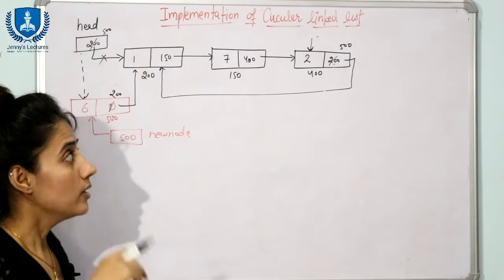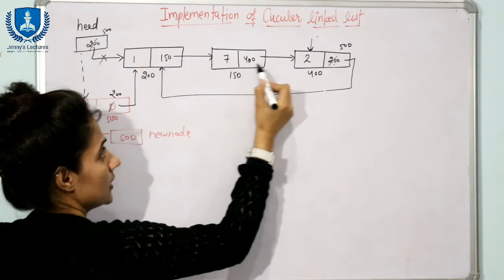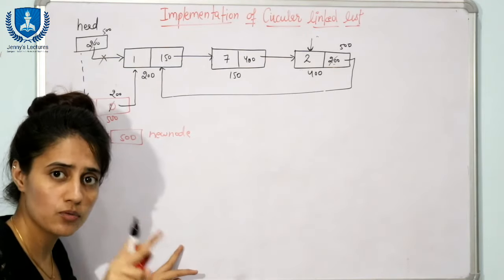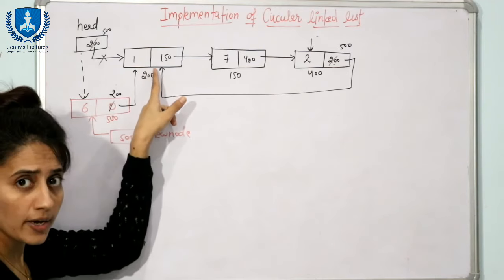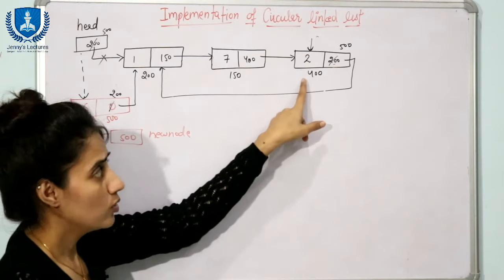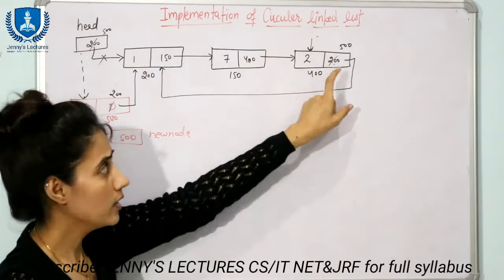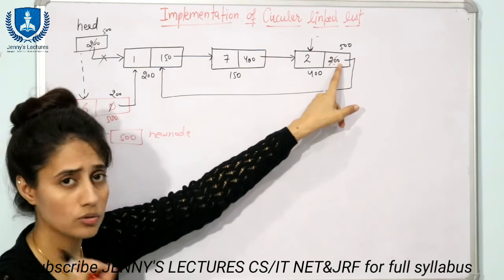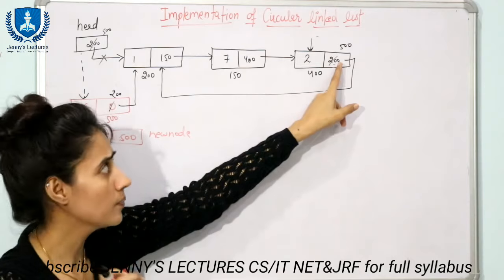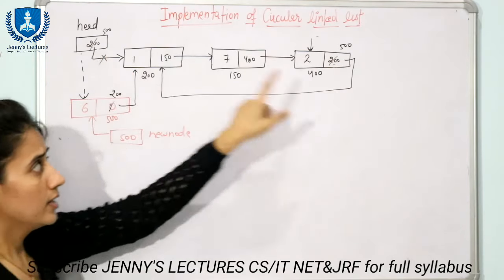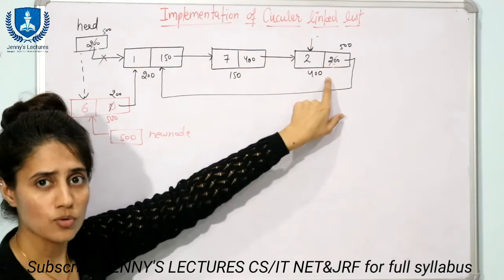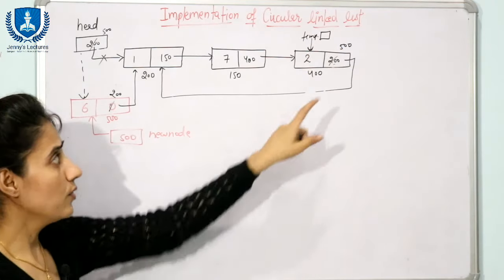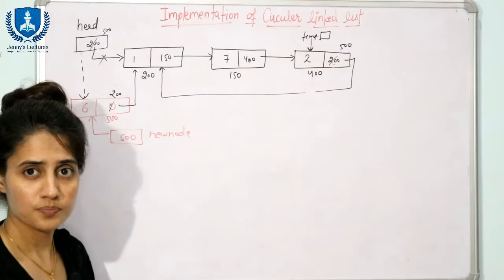So you have to traverse the list to reach the last node before updating these links. We take a temp pointer, temp points to the head, then we do temp = temp->next repeatedly until we reach the last node. The termination condition is when temp->next becomes equal to head, because here the null condition doesn't apply — the termination condition is when next contains the address of head. Then we can access that last node as temp, and set temp->next = new node.